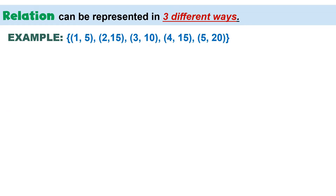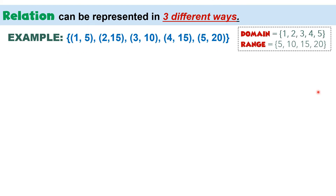Relation can be presented in three different ways. Let us use the same set of ordered pairs, wherein the domain values are 1, 2, 3, 4, and 5, and the range values are 5, 10, 15, and 20. Let us start with the first way on how to present relation.